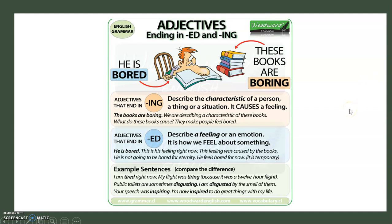So we have adjectives. Here we can see 'he is bored' — that ends in -ed. And here we have 'these books are boring.' So when we look at -ing, we're describing a situation, a characteristic of a thing or a situation — we're describing the books. But when we use -ed, we describe a feeling or an emotion; it's how we feel about something. So how does he feel right now? He is bored. Let's take a look at some examples and then we're going to come back to this.